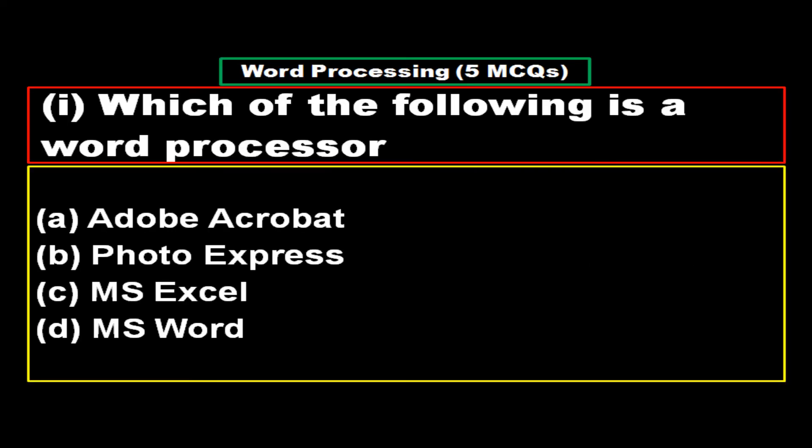Multiple choice questions from the topic word processing. Let's start. Which of the following is a word processor? Options: A - Adobe Acrobat, B - Photo Express, C - MS Excel, D - MS Word.